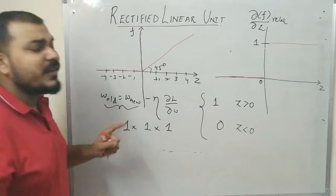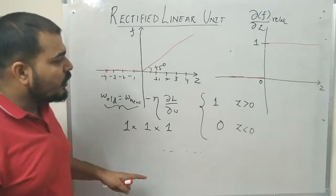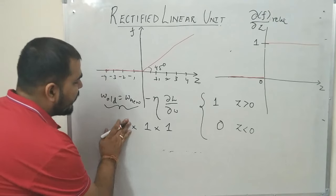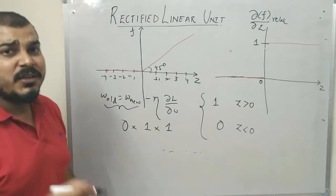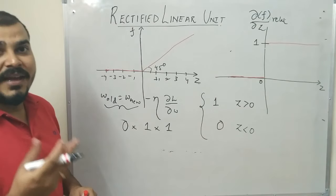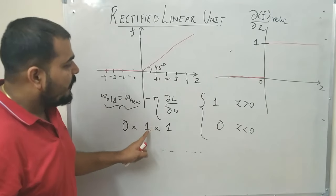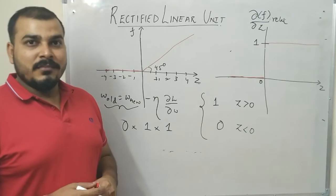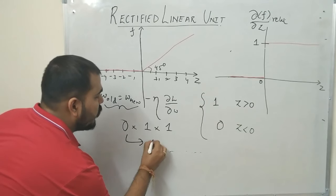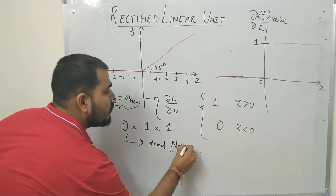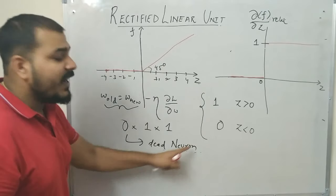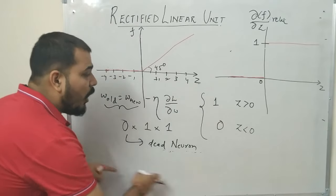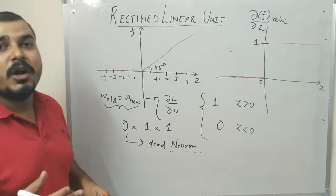However, there is one problem with the ReLU function, which is fixed by leaky ReLU. Suppose one of the derivatives becomes 0. When the derivative becomes 0, all the values in the derivative chain will be 0. When substituted into the weight update formula, this makes w_old equal to w_new, which is of no use. This creates a dead neuron or dead activation function, meaning no processing is happening. To fix this problem, we use the concept called leaky ReLU.